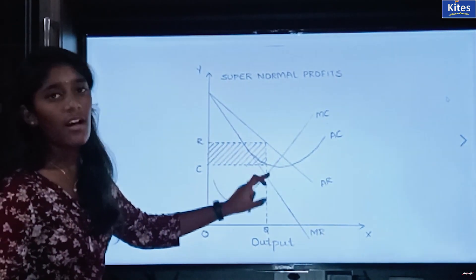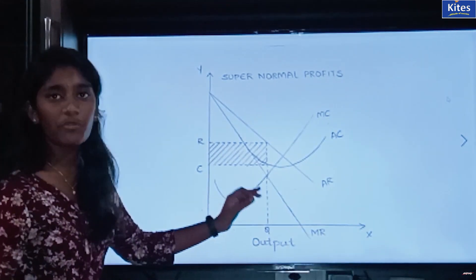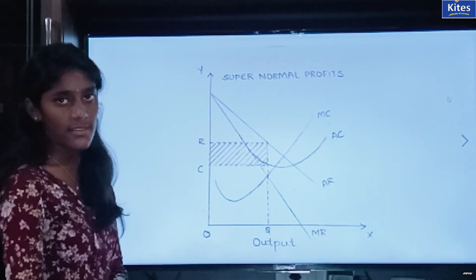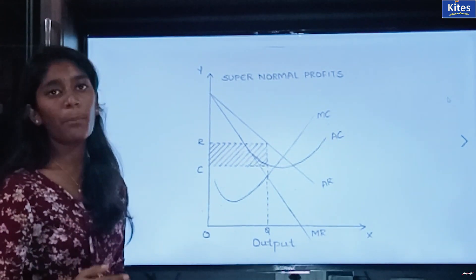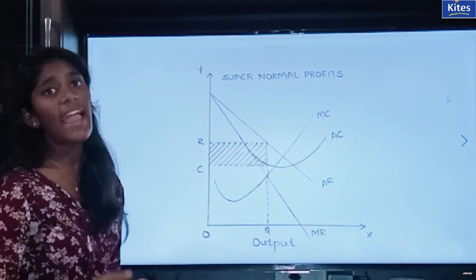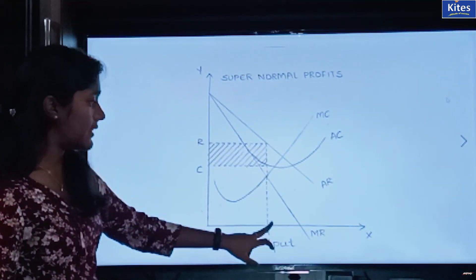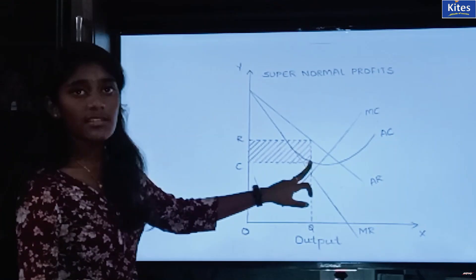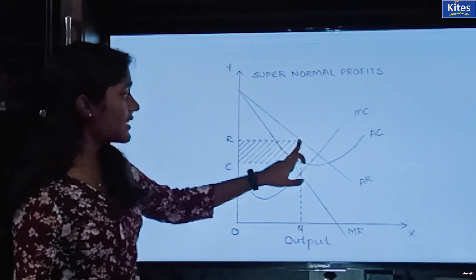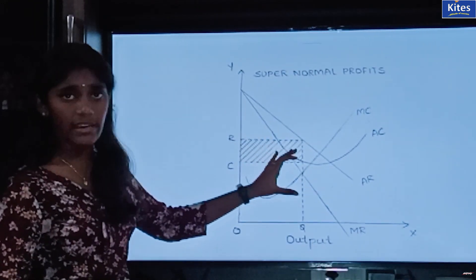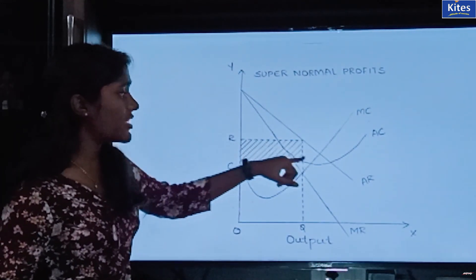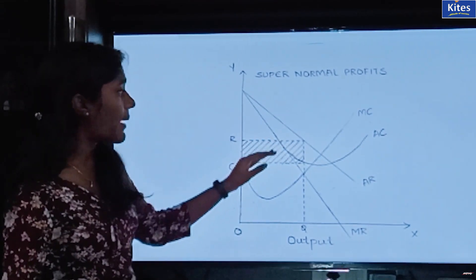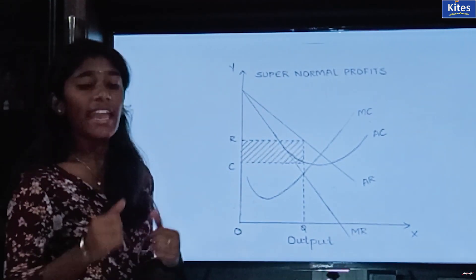So this is the point where the firm is in equilibrium. Now we have to check whether it is in super normal profits, normal profits, or losses. We must compare the average cost curves and average revenue curves. At this point, this is your average cost — that is the cost of production being spent. This is the cost which is incurred and this is the revenue which we got. From here we can say that the cost which is incurred is less and the revenue which we have got is more. So that is the case of super normal profits. The shaded part here represents the super normal profits in imperfect competition.